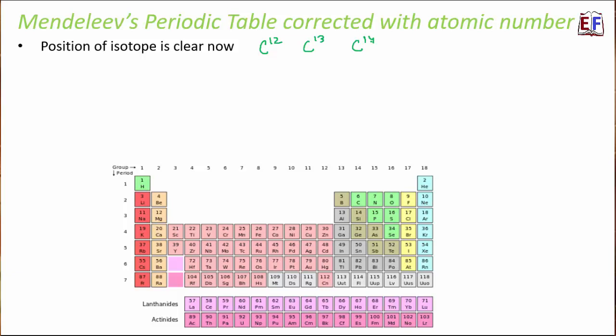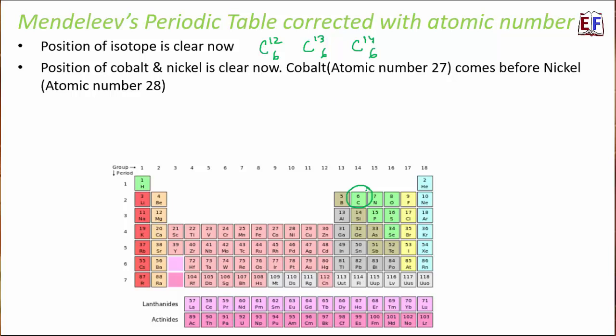In the modern periodic table, since all three isotopes of carbon have the same atomic number — which is six — they have just one position on the periodic table. Different isotopes do not get different positions because elements are now placed based on their atomic number. So the position of isotopes was clearly resolved.